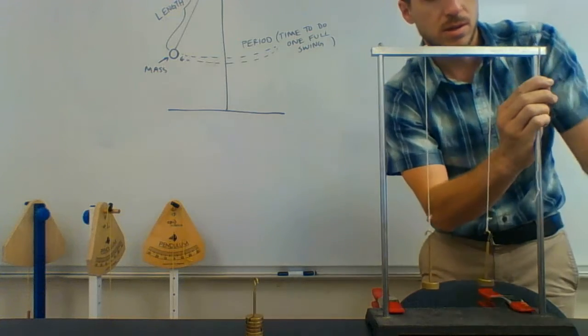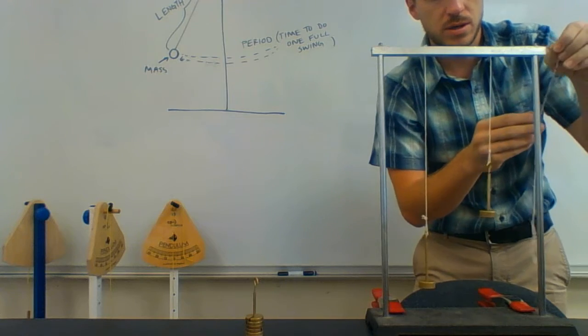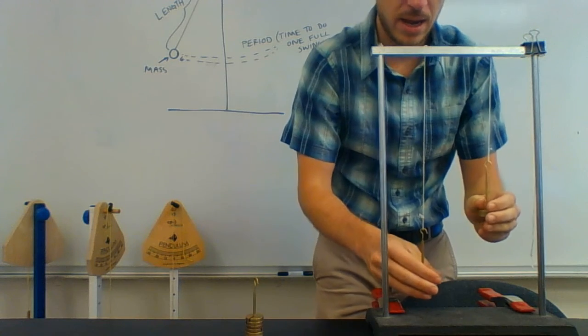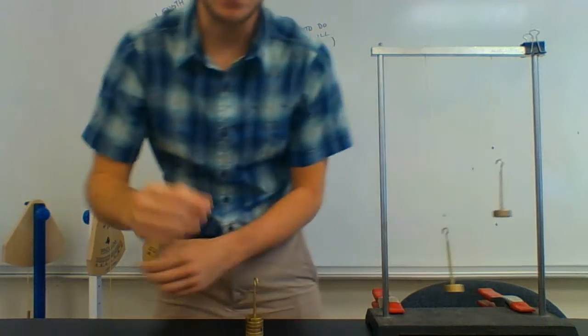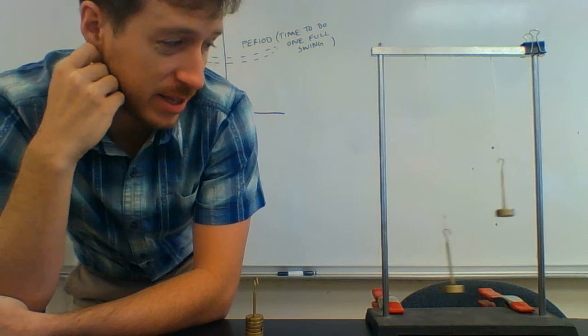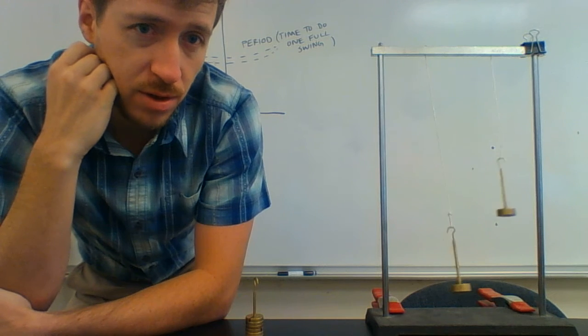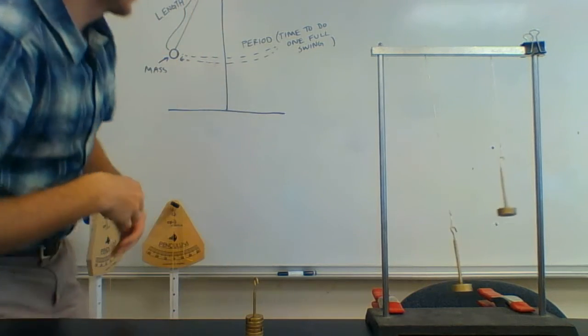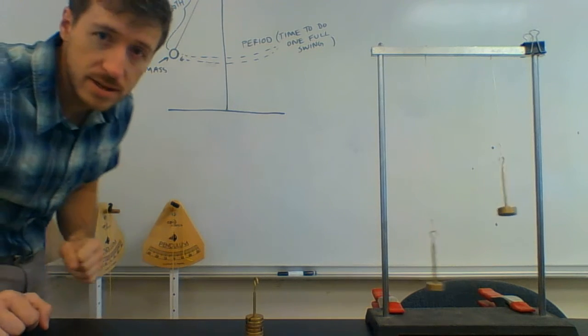Let's see what effect the length has. So if I shorten this one significantly, and now pull them back to the same amplitude, you can see right off the bat the effect that length has. The shorter one is swinging significantly faster than the longer one, and so you'll see they're totally out of sync. Their periods are very different. So we find that length affects the period of a pendulum, whereas mass and amplitude have no effect.